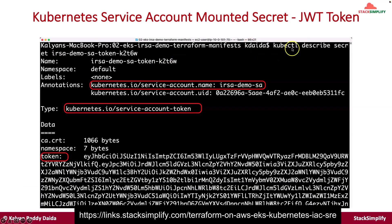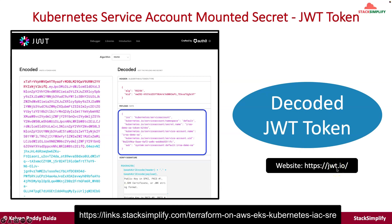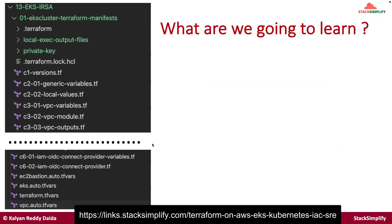The next thing is a kubectl describe of the secret named IRSA demo SA token, which is mounted inside your service account named IRSA demo SA. You can see the token. As mentioned, this is a JWT (JSON Web Token). If you take that token and go to the website jwt.io and provide the encoded token, it will decode and provide the information. The decoded JWT token shows that its issuer is the Kubernetes service account, and you will also have the namespace, secret name, and all the information in the payload data.